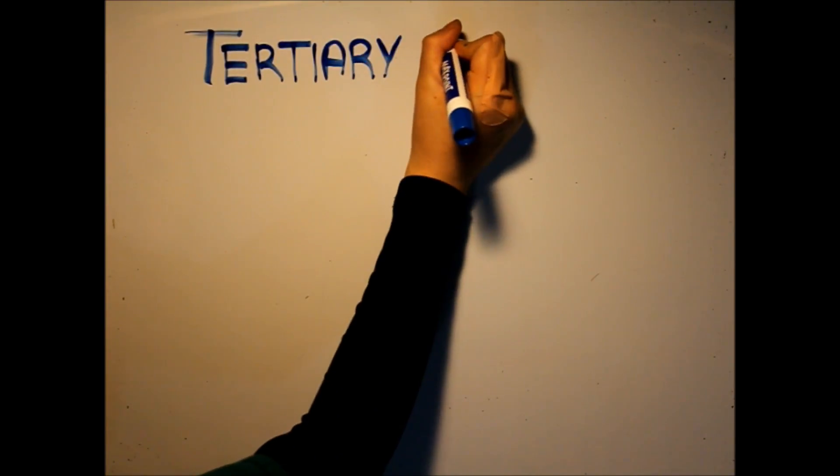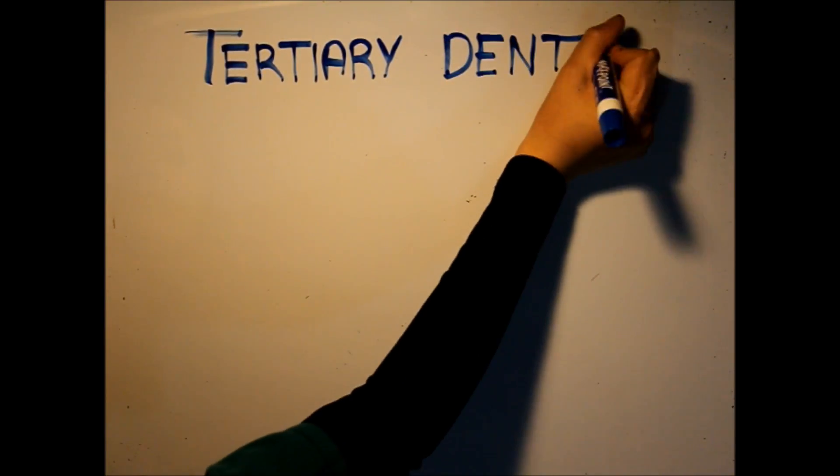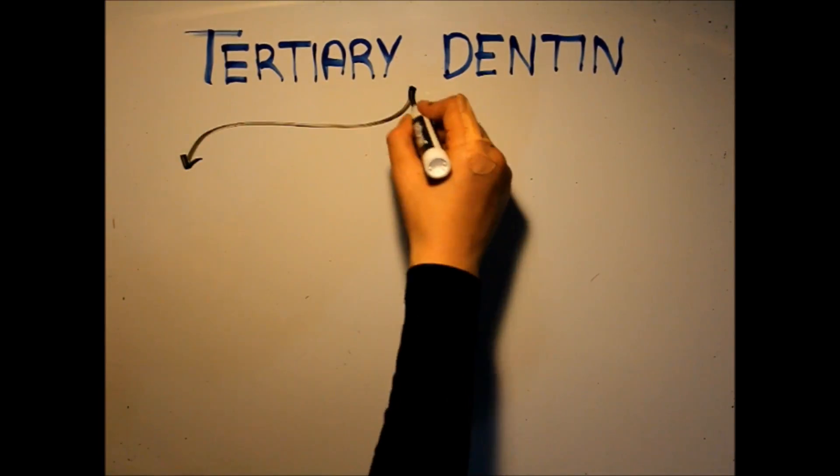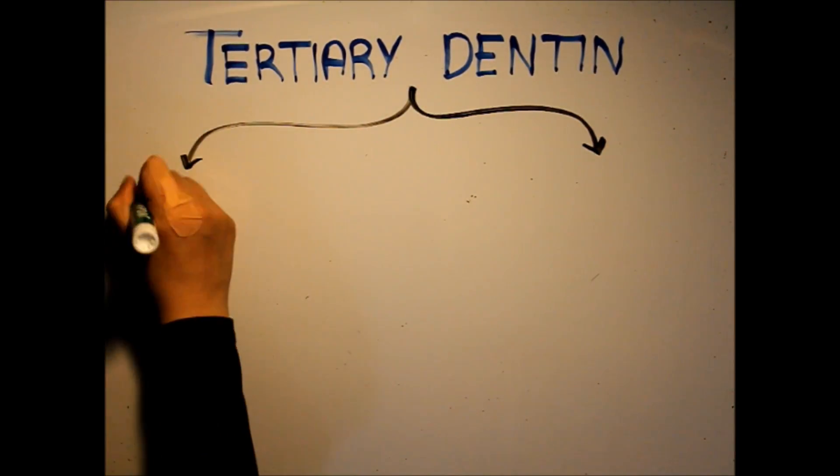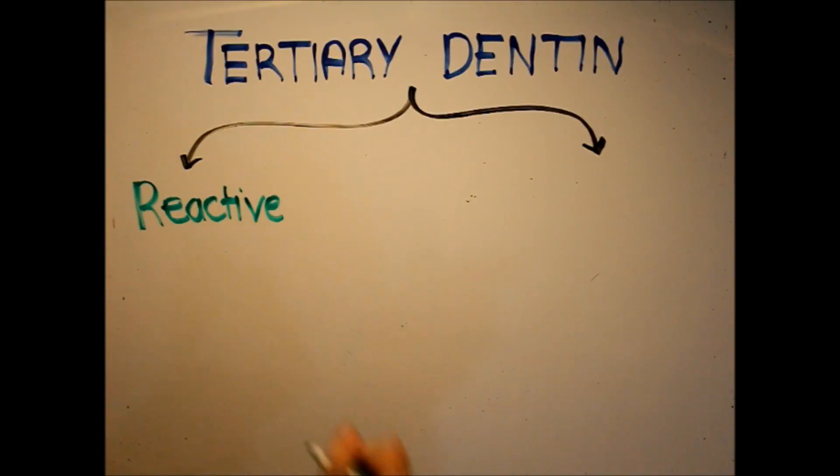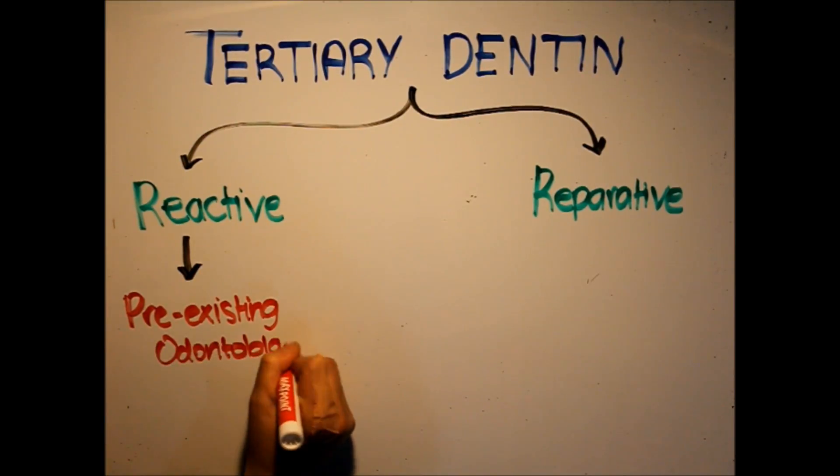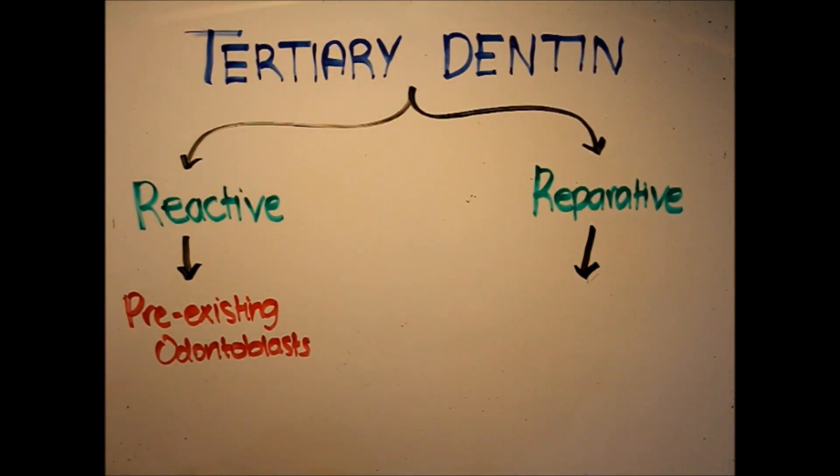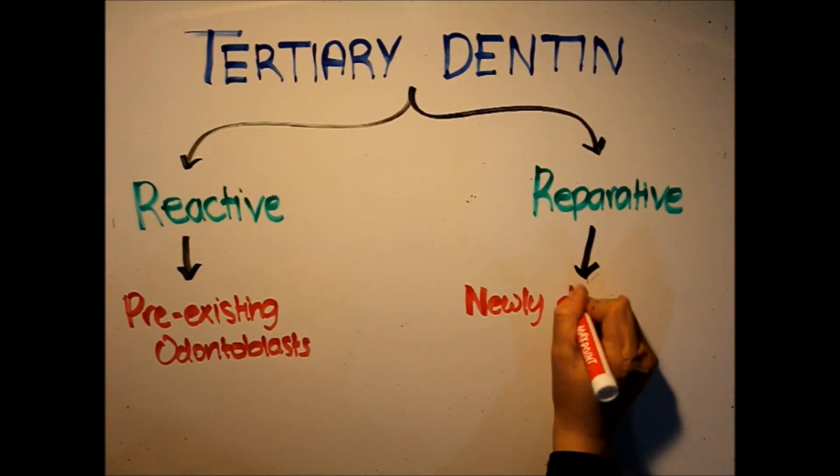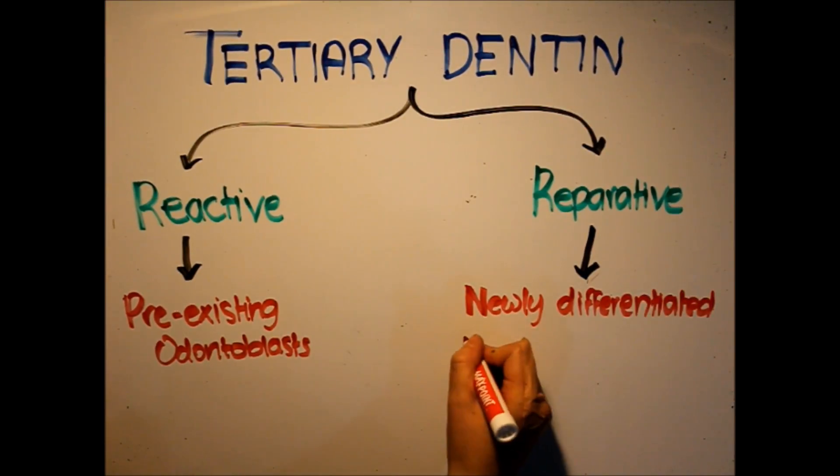Now, in case of injury, dentin has a protective mechanism to prevent damage of the pulp. This creates two specific types of dentin: tertiary and sclerotic. The type of tertiary dentin secreted depends on the severity of the injury. When the injury is minimal, pre-existing odontoblasts will secrete reactive tertiary dentin, while if the injury is substantial, newly differentiated odontoblast-like cells secrete reparative tertiary dentin.